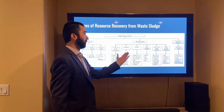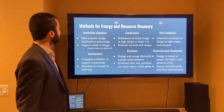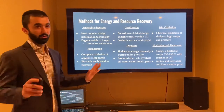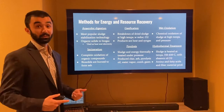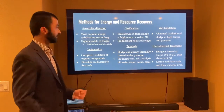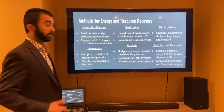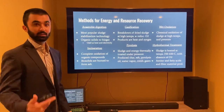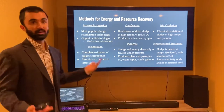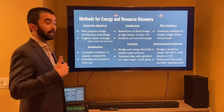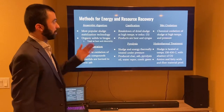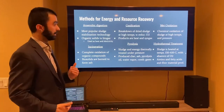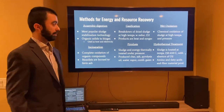Thermochemical processes typically occur at higher pressure and temperature. Methods for energy and resource recovery include: anaerobic digestion — the most popular sludge stabilization technology, converting organic solids to biogas used as heat and electricity; incineration — complete oxidation of organic compounds burning biosolids to ash; gasification — breakdown of dried sludge at high temperatures with reduced oxygen, producing heat and syngas; pyrolysis — thermal treatment of sludge under pressure; wet oxidation — chemical oxidation at high temperatures and pressures; and hydrothermal treatment — heating sludge between 150–450°C in the absence of oxygen, producing amino acids, fatty acids, and fiber material.